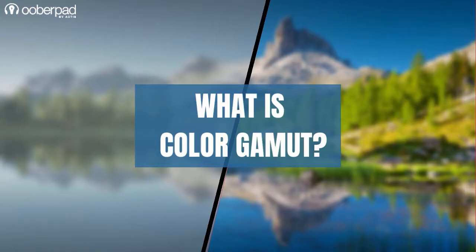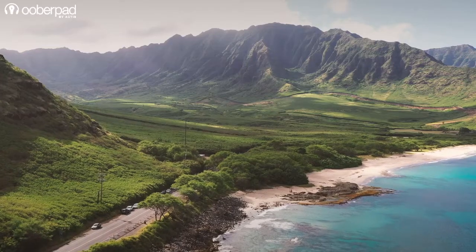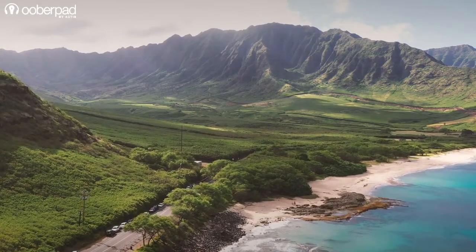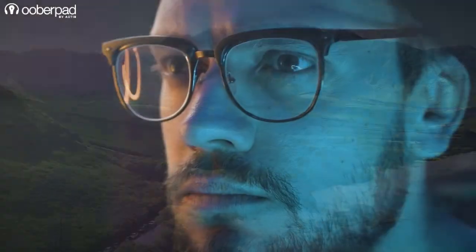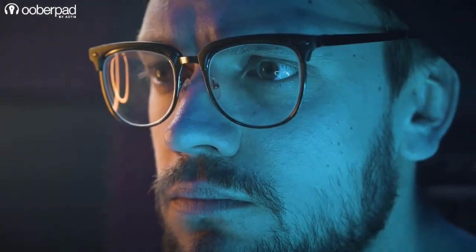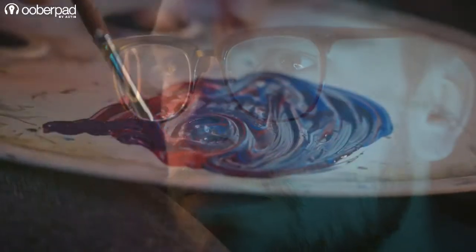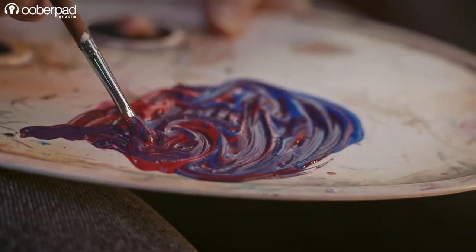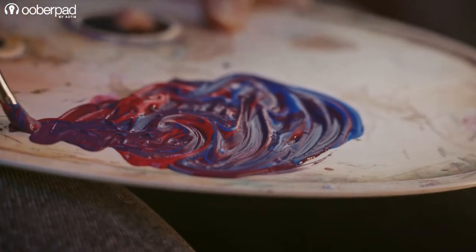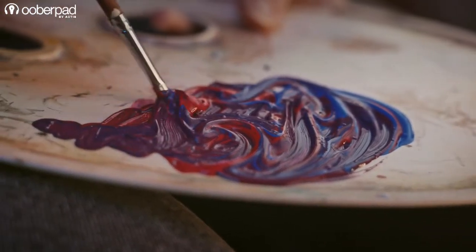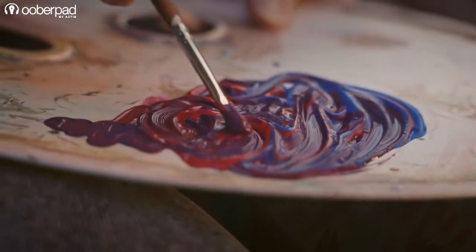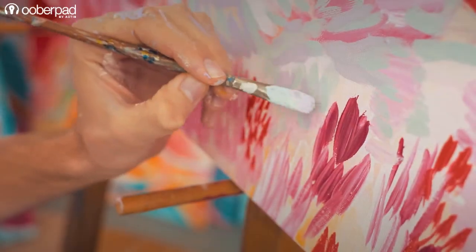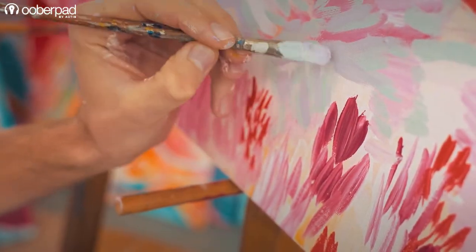First, let's understand what a color gamut is. By definition, it is the range of colors within the visible color space of the human eye which a display device is able to reproduce. Think of it as the palette of colors from which you can choose to create an image. The wider the range of colors in the palette, the richer the images you can create, and vice versa.